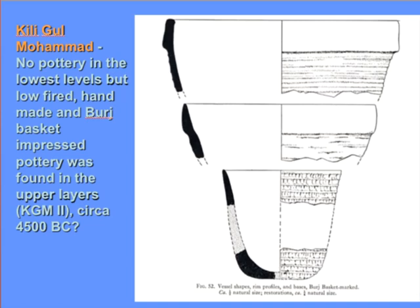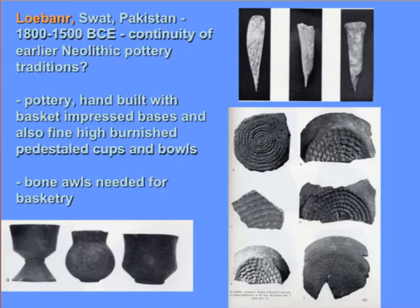At the site of Kiligul Muhammad, which Fair Service also excavated, the earliest pottery was made by lining baskets with clay and then firing them — one technique for making large storage and cooking vessels. In Luebanar and Swat, this technology of using baskets continues up into the late Harappan period. The use of coiled baskets as a foundation on top of which pots were hand-built continued for a very long time, with the basket itself acting like a turning device.